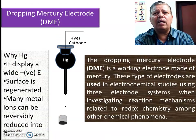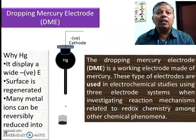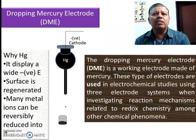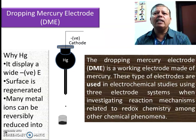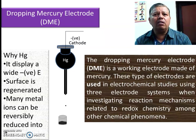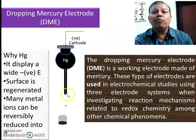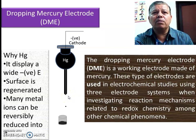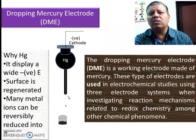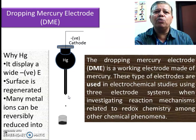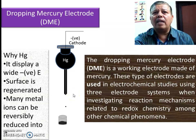The dropping mercury electrode is the most important electrode in this apparatus, acting as the working electrode made up of mercury. This type of electrode is used in electrochemical studies using a three-electrode system when investigating reaction mechanisms related to redox chemistry among other chemical phenomena. Mercury displays a wide negative potential, its surface is newly generated, and many metals can be reversibly reduced into it — therefore mercury is used and acts as a cathode.